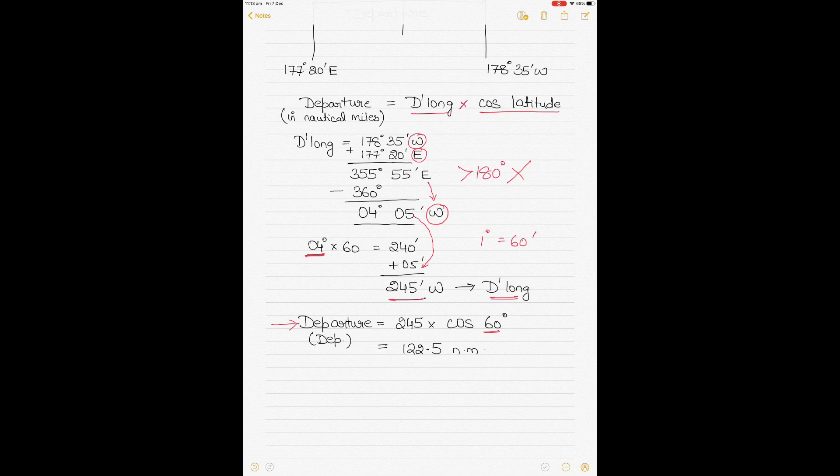So departure, if going by the above formula D long times cos of latitude, is 245 times cos of 60 degrees. This is how you put it in the calculator and the answer that you get is 122.5, and the unit of departure is of course nautical miles.